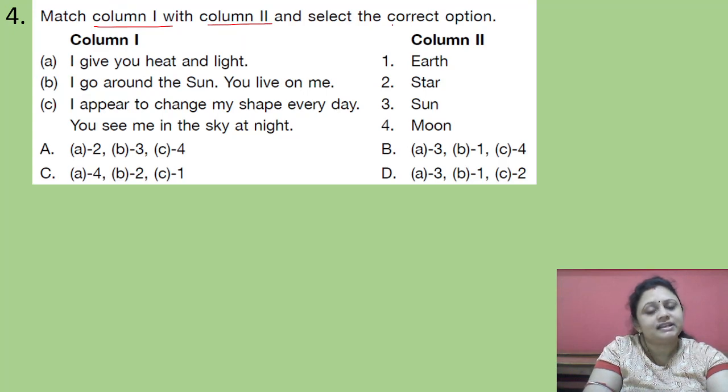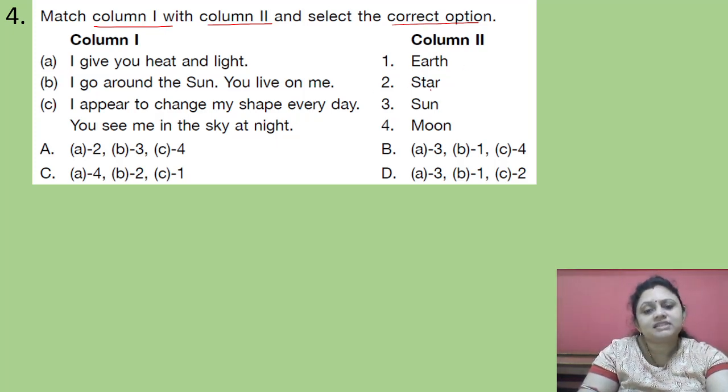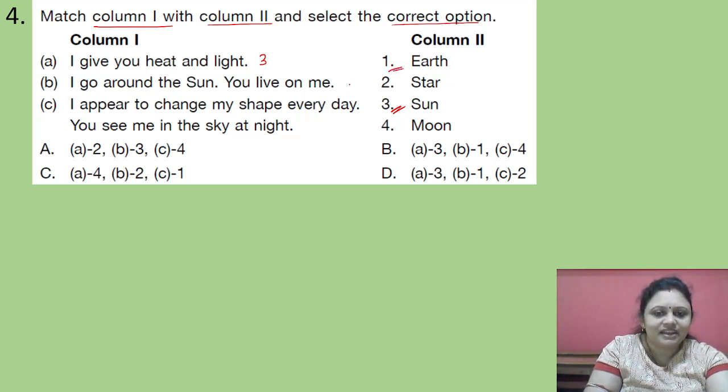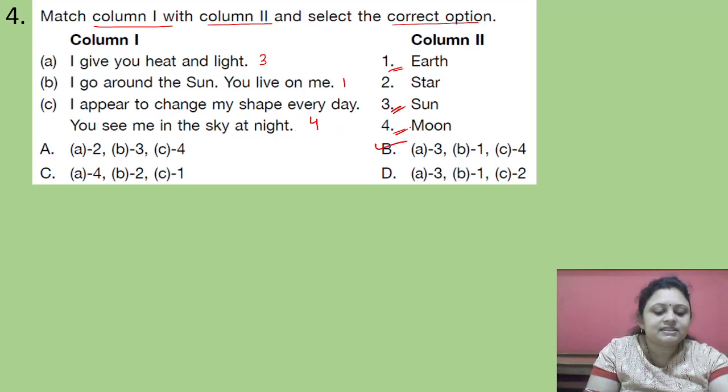Match column 1 with column 2 and select the correct option. Column 1: I give you heat and light. I go around the sun. You live on me. I appear to change my shape every day. You see me in the sky at night. Column 2: Earth, Star, Sun and Moon. I give you heat and light. Who is that? That is sun. So we can write here 3. I go around the sun. You live on me. On which thing we are living? We live on earth. So here we can write 1. I appear to change my shape every day. You see me in the sky at night. In the sky at night we can see both stars and moon. But who changes shape every day? That is moon. So we can write here 4. A3, B1, C4. When it is present? It is present in option B.